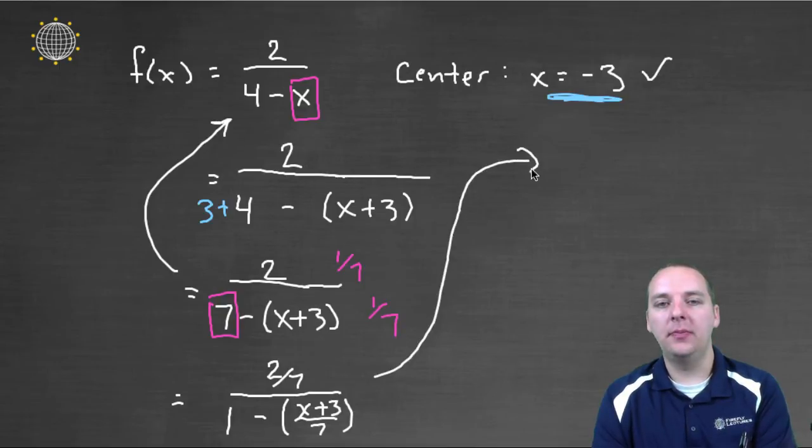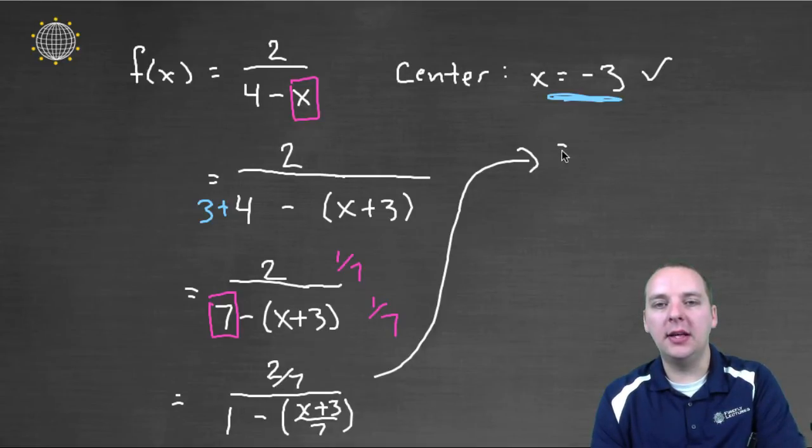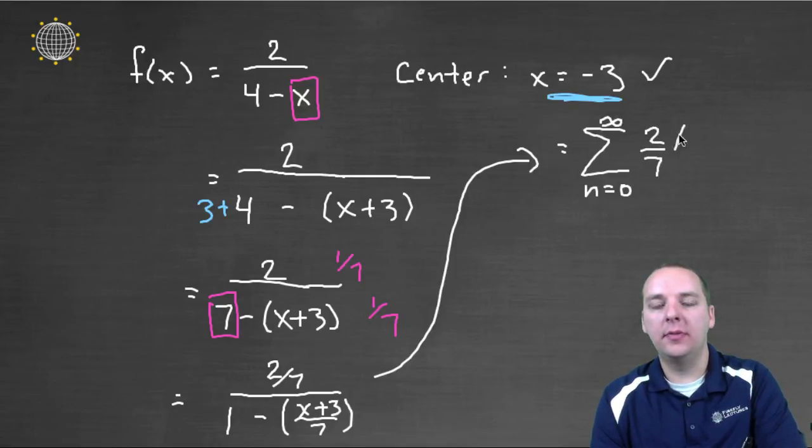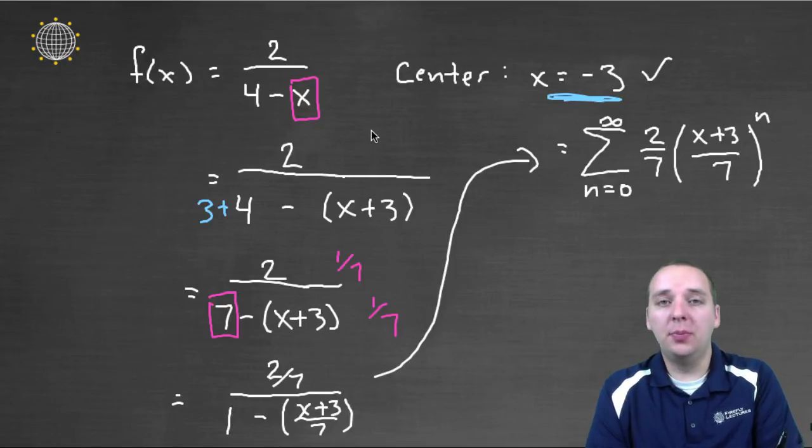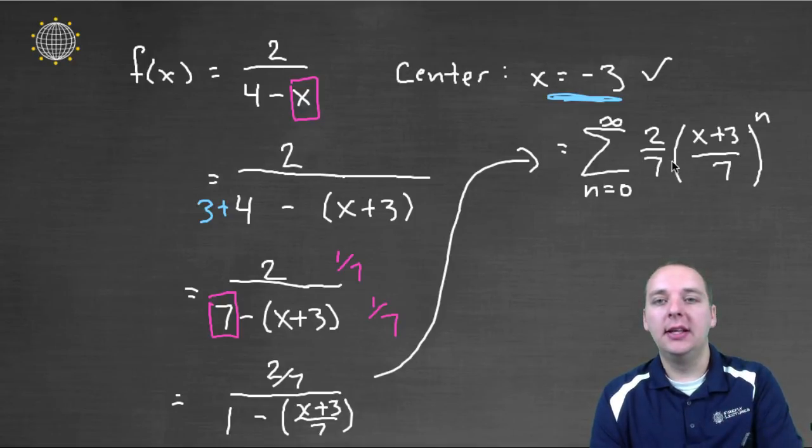So let's do that. So I'll bring this guy up here, so if you're not getting lost in all my lines and everything, I'll take this line out. OK, we don't really need that. OK, so continuing with this line up here at the top, this would be the same as the sum from n equals 0 to infinity of a times r to the n. So we'd have 2 sevenths times x plus 3 over 7 to the n. So, I've completed my task. I've written this function as a power series, but not just any power series. This guy is specifically centered at negative 3.